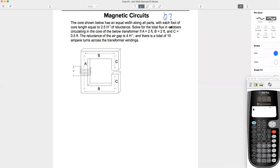If A equals 2 feet, B equals 2 feet, C equals 0.5 feet, and the reluctance of the air gap is 4 inverse henries. And there's a total of 10 ampere turns across the transformer windings. Is this already starting to look like a circuit to you? In other words, it's almost like we have voltage, we have impedance, now we just got to solve for current.